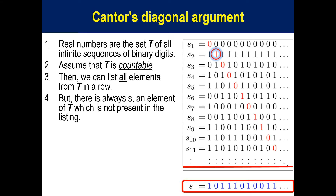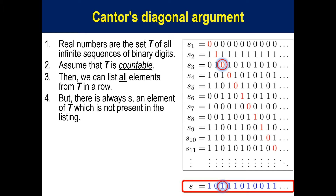The second digit in s₂ is 1. Thus, let the second digit of s be 0. The third digit in s₃ is 0. Thus, let the third digit of s be 1, and so on. Then s is different from any s_i in the list: different from s₁ in the first digit, different from s₂ in the second digit, different from s₃ in the third digit, and so on. Thus, there is always s, an element of T, which is not present in the list.